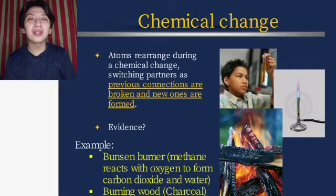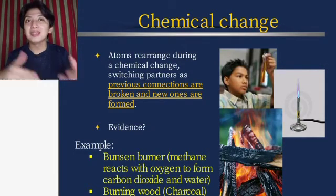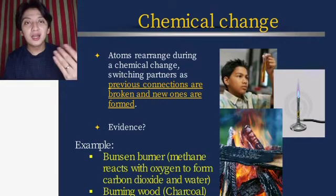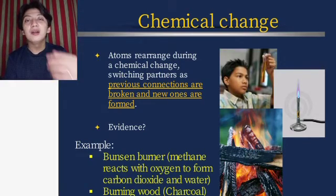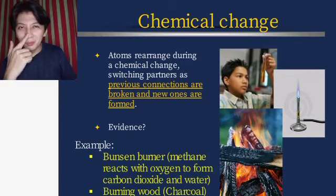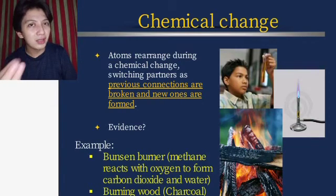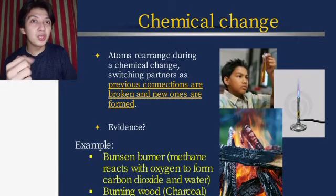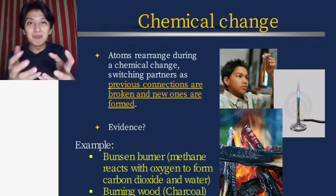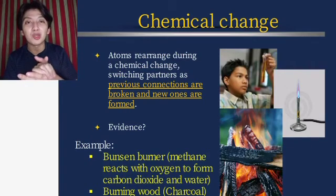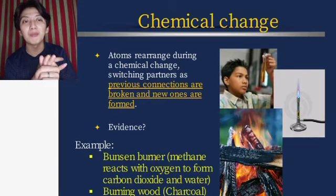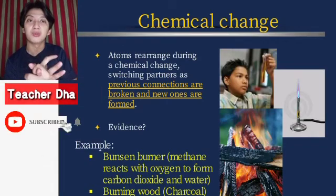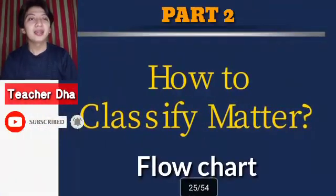In a chemical change, atoms are rearranged — switching connections as previous bonds are broken and new ones are formed. Evidences of chemical change include smelling a rotting root or rotting wood, wood turning into charcoal, or paper burning into ashes. Examples: a Bunsen burner where methane reacts with oxygen to form carbon dioxide and water, and burning wood producing charcoal.